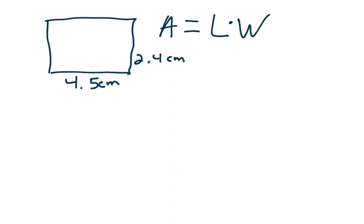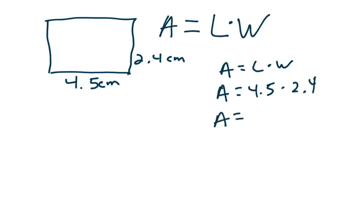We always start with our formula: area is equal to length times width. We're going to plug in what we know — area is equal to 4.5 times 2.4. Using a calculator: area is equal to 10.8 centimeters squared. Do not forget the squared symbol on your label, and do not forget a label with each of those problems. That label is two points in my classroom — one point for centimeter, one point for the squared unit. You can't forget that.